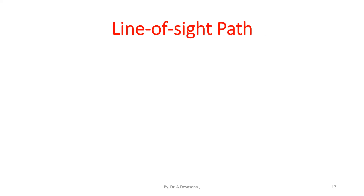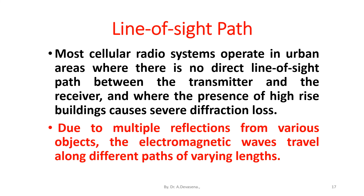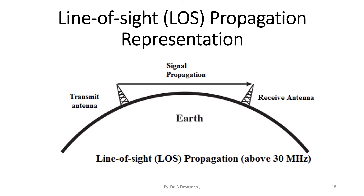Line of sight path: most cellular radio systems operate in urban areas where there is no direct line of sight path between the transmitter and the receiver, and where the presence of high-rise buildings causes severe diffraction loss. Due to multiple reflections from various objects, electromagnetic waves travel along different paths of varying lengths. Line of sight propagation is represented here, showing a transmit antenna and receive antenna with signal propagation between them. This line of sight propagation occurs above 30 megahertz.